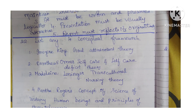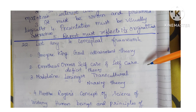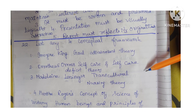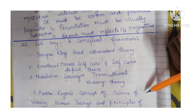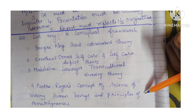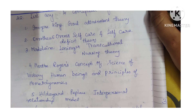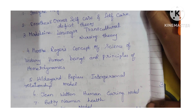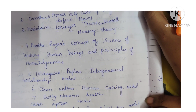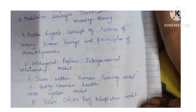Conceptual frameworks include: Imogene King's Goal Attainment Theory; Dorothea E. Orem's Self-Care and Self-Deficit Theory; Madeleine Leininger's Trans-Cultural Nursing Theory; Martha Rogers' Concept of Science of Unitary Human Beings and Principles of Homeodynamics; Hildegard Peplau's Interpersonal Relationship Model; Jean Watson's Human Caring Model; Betty Neuman's Health Care System Model; and Sister Callista Roy's Adaptation Model.